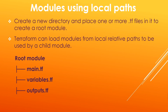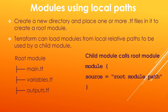Now let us create a root module by creating a directory which includes all the related files like input variables .tf, all required resources in main.tf, and to export relevant useful attributes information in an output.tf file. Now our root module is created. We can call the root module through a child module by creating a module block in the configuration files of the child module, mentioning the mandatory source field with the argument as the local relative path of the root module directory.